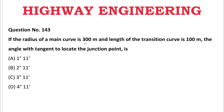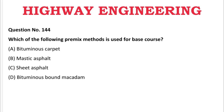Next question: If the radius of the main curve is 300 m and the length of the transition curve is 100 m, the angle of the transition to locate the junction point is — A: 1°11′, B: 2°11′, C: 3°11′, D: 4°11′. The correct answer is C, 3 degrees 11 minutes.